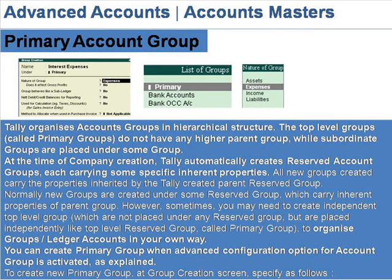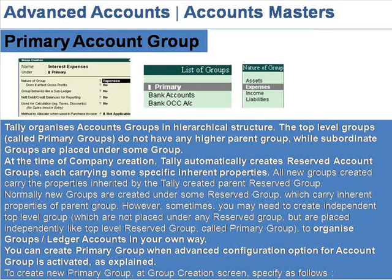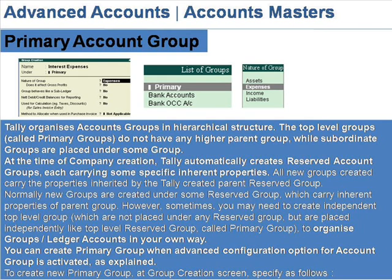Tally organizes account groups in a hierarchical structure. The top-level groups, called primary groups, do not have any higher parent group, while subordinate groups are placed under some group. At the time of company creation, Tally automatically creates reserved account groups, each carrying some specific inherent properties.